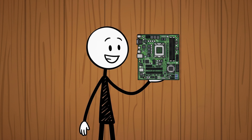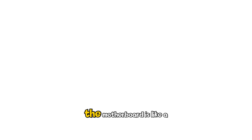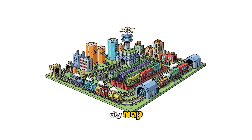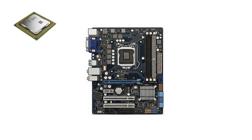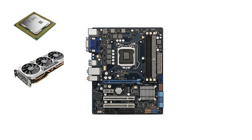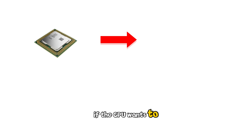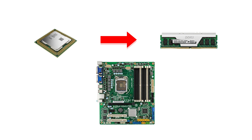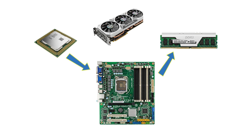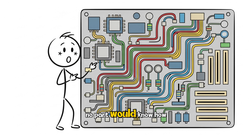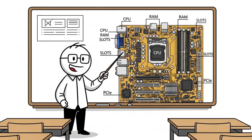Now let's meet the motherboard. The motherboard is like a city map where all the roads connect. It joins the CPU, GPU, RAM, storage, and other parts so they can communicate with each other. If the CPU wants to send data to RAM, or the GPU wants to receive instructions, it all goes through the motherboard. Without this map, no part would know how to reach another — that's why it's called the backbone of the computer.